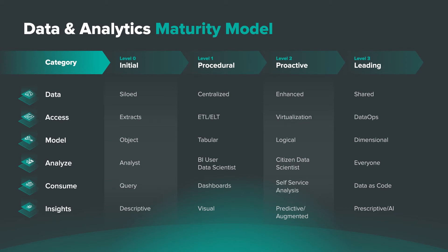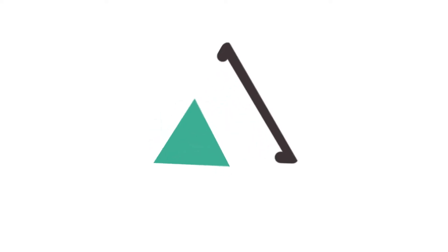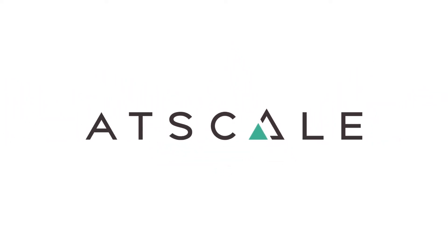Ultimately, that leading maturity level means we've moved beyond humans alone making decisions. Now we have humans and machines making decisions together to create a truly data-driven culture and organization — moving the full spectrum from query all the way to autonomously making decisions and changes in our business to make it more profitable and deliver better experiences for our customers.